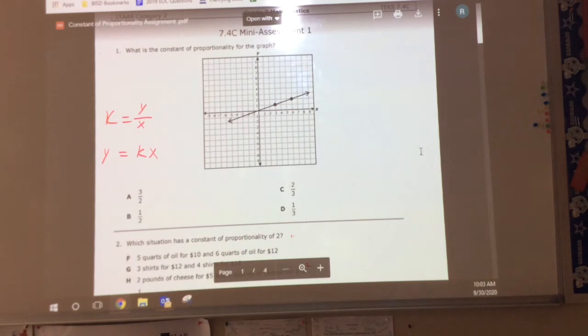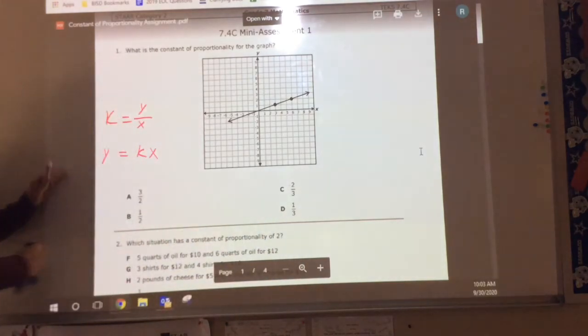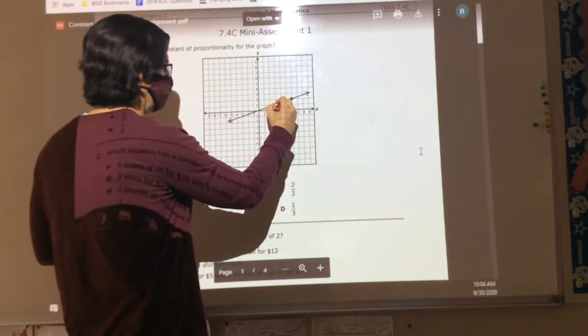And y equals kx. It says, what is the constant of proportionality in this graph? What we're trying to do is we're trying to figure out what is it increasing by? Okay. So we know that k equals y divided by x. Can we all agree with that? Yeah.